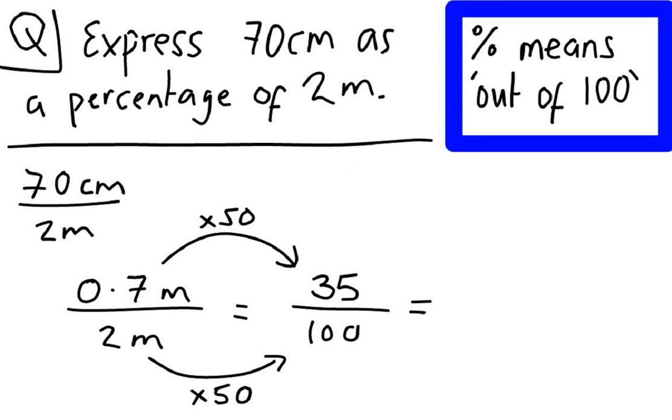So as a percentage, remember the last step, as a percentage, because that is now out of 100, we can say that 70 centimetres is 35% of 2 metres. And we have now calculated that. So just be very careful of any question that is given to you. It asks you to express one quantity as a percentage of the other, where the units are not the same. You just need to be very careful and watch out for where you need to convert.